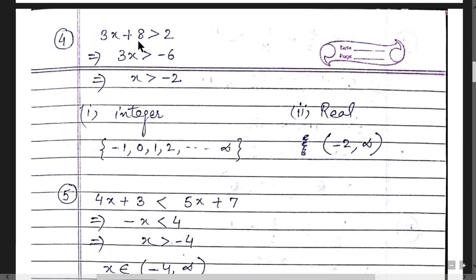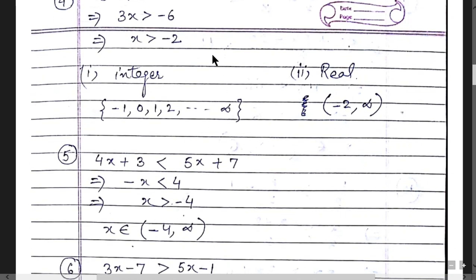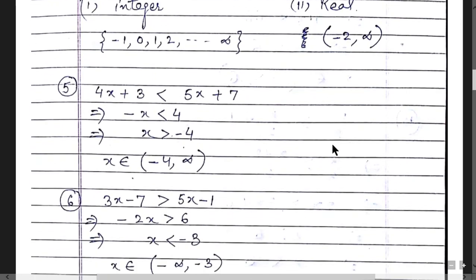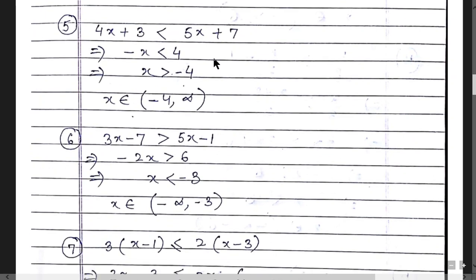Question 4: 3x + 8 > 2. This gives 3x > -6, so x > -2. No negative sign is being shifted here, so the inequality sign remains the same. If x is an integer, the values are -1 to infinity. If x is a real number, the interval is (-2, ∞), because all decimal values like 1.1, 1.2, 1.3 are also included.